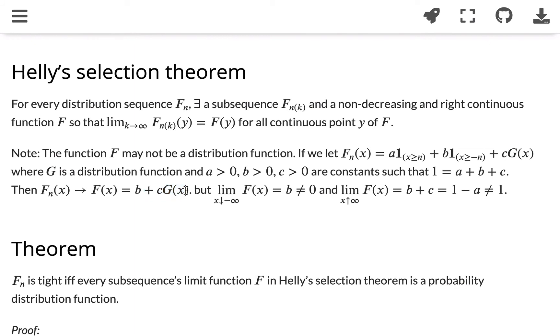But then the limiting value of f when x goes to minus infinity is b, which is not 0. And also the limiting function of f when x goes to plus infinity is b plus c, which is 1 minus a, which is also not 1. So this is an example that tells us that fn may not be converging to a distribution function.